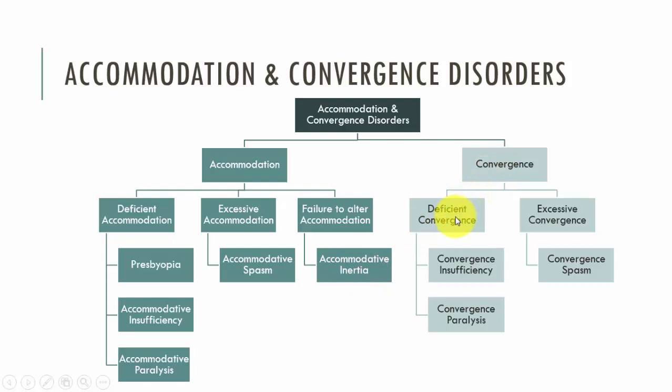With respect to convergence, we have conditions relating to deficient convergence and those related to excessive convergence. With excessive convergence, the condition is called convergent spasm. With deficient convergence, we have convergence insufficiency and convergence paralysis.